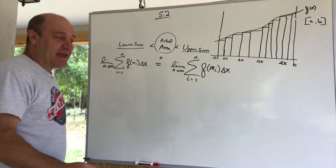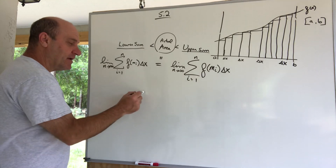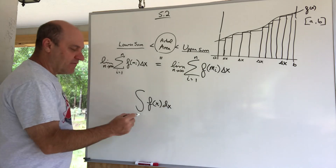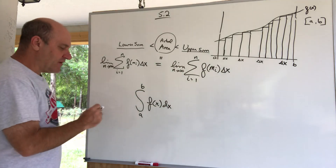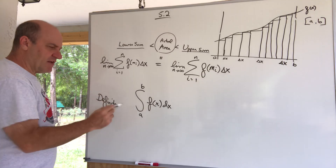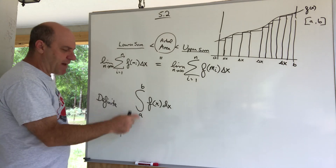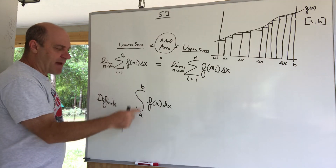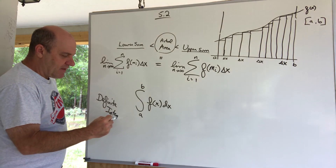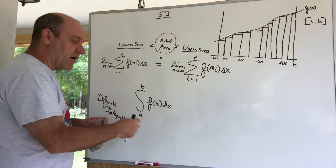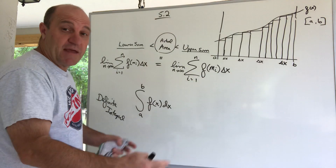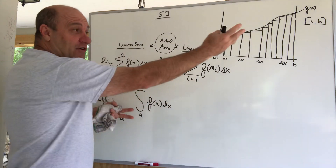The actual area is represented by an integral of the function with respect to x from a to b — what we call a definite integral. In 5.1 we did indefinite integrals without bounds of integration. With these bounds of integration, we call it a definite integral. The answer is a function that you evaluate from a to b, so the answer is a number. And what is that number? The area under the curve — the actual area under the curve.